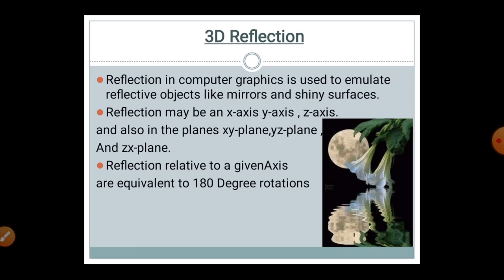Now moving to the next topic: 3D reflection. Many screensavers on mobiles show the moon or some object with a reflection on water — this is the effect of 3D reflection. In computer graphics, 3D reflection is used to emulate reflective objects like mirrors and shiny surfaces.